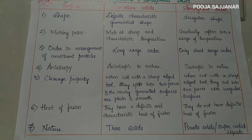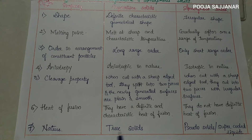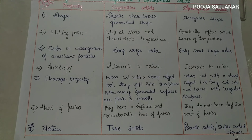The seventh property is nature. Crystalline solids are true solids, while amorphous solids are pseudo solids or super-cooled liquids. Crystalline solids are called true solids because they are pure solids consisting of strong solid properties. But amorphous solids are called pseudo solids or super-cooled liquids because they have the tendency to flow, but very slowly.